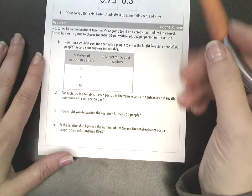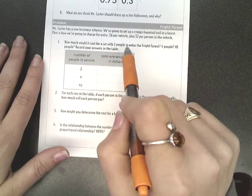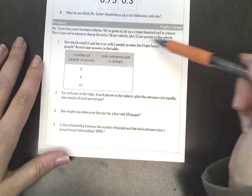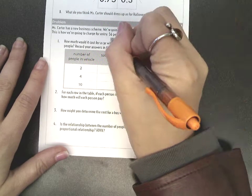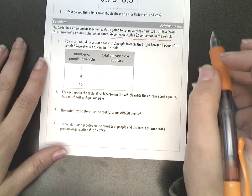So we started just with a scenario. Here we've got my new business scheme. I want to set up a creepy haunted trail and we're going to charge in this way for entry: $6 per vehicle plus $2 per person in the vehicle. And that's how we will charge the entry fee.